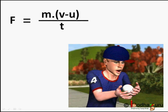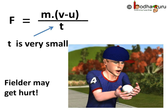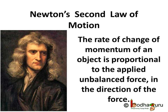Now that you understand Newton's second law of motion, let us see why fielders pull their hands backwards while catching the ball. This is done to increase the time in which velocity is reduced to zero, so the rate of change in momentum is decreased. Hence, lesser force needs to be applied to stop the ball. On the other hand, if the fielder tries to catch the ball suddenly, the high velocity decreases to zero in a very short time. So the change of momentum is very large, and a large force will be required to hold the catch — which may also hurt the fielder. So now you know Newton's second law of motion: the rate of change of momentum of an object is proportional to the applied unbalanced force, and it is in the direction of the force.